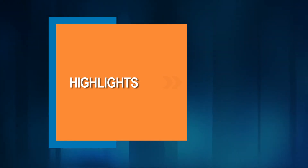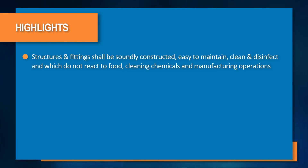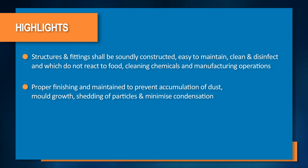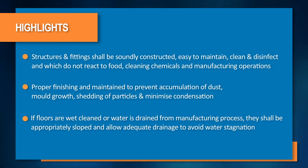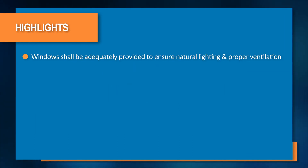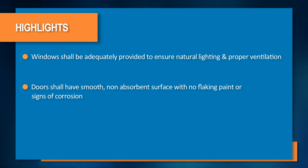The main points discussed in this video are: structures and fittings in the establishment shall be soundly constructed, easy to maintain, clean and disinfect, and shall not react to food, cleaning chemicals and manufacturing operations. They should have proper finishing and be maintained to prevent the accumulation of dust, mold growth, shedding of particles and minimize condensation. If the floors are wet cleaned or water is drained from the manufacturing process, they shall be appropriately sloped and allow adequate drainage to avoid water stagnation. Windows shall be adequately provided to ensure natural lighting and proper ventilation. Doors shall have smooth, non-absorbent surfaces with no flaking paint or signs of corrosion.